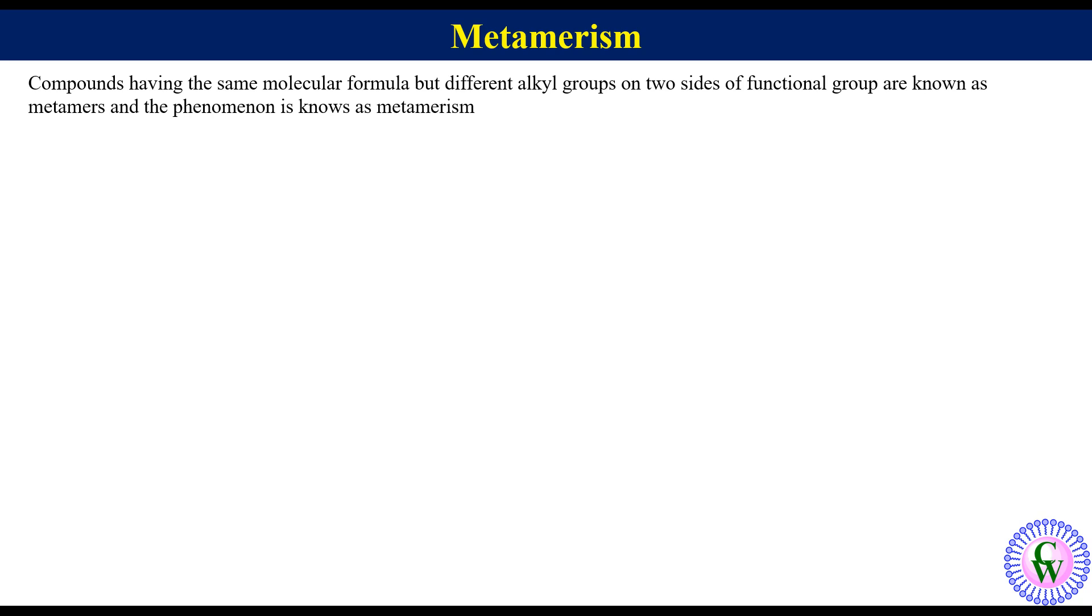Compounds having the same molecular formula but different alkyl groups on two sides of a functional group are known as metamers and the phenomenon is known as metamerism. For example, diethyl ether and methylpropyl ether.